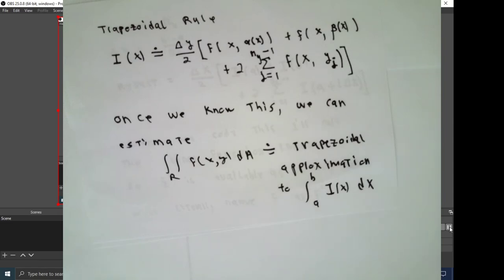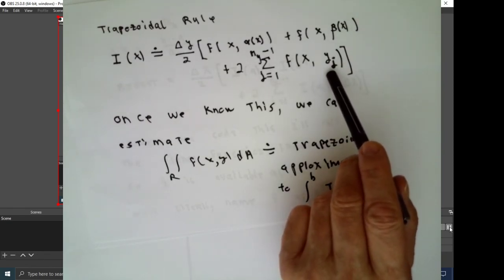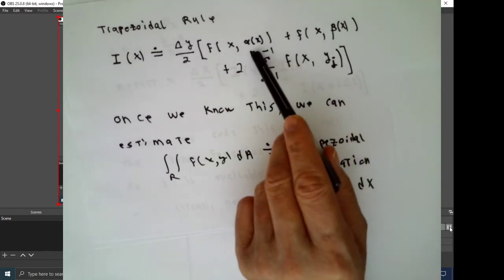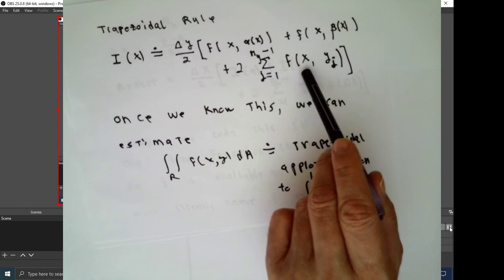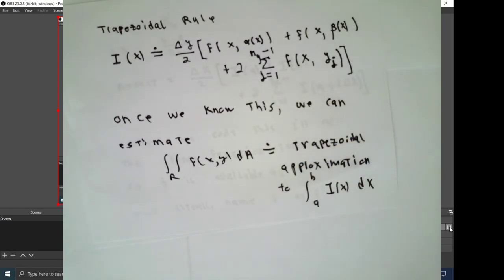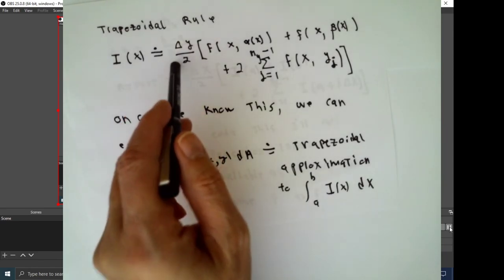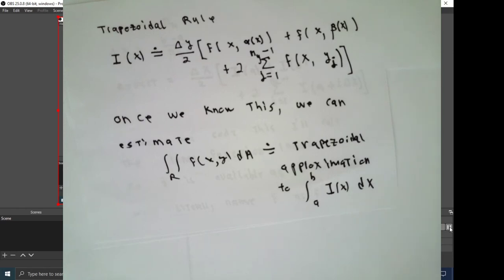You add up all the function values with indexes 1 up to n sub y, in this case, minus 1, and double those. So we will add up y1, y2, up to y, in y minus 1, x is a constant, and double that. This is going to be, and then of course multiplied by delta y over 2. This will be my trapezoid rule approximation to the inner integral, and once I know how to do that, which I do, we'll use that in another trapezoid rule approximation to approximate the double integral.